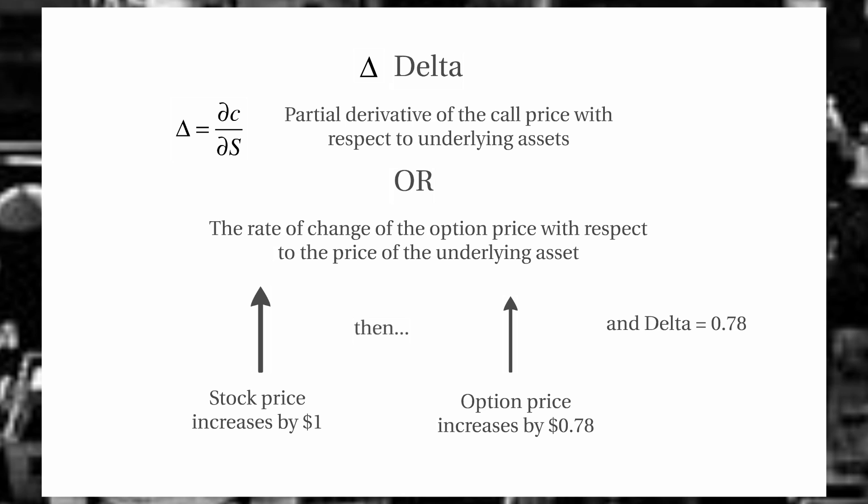Delta is a description of the correlation between the two assets, and these will range from negative 1 to 0 for a long put or a short call, or from 0 to 1 for a long call or a short put. So we can see it's the same ranges as we have for a correlation between two items.